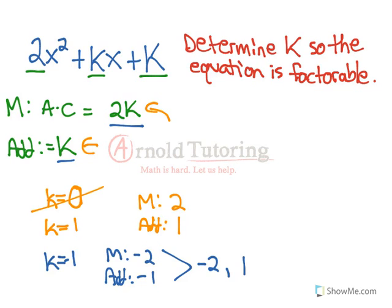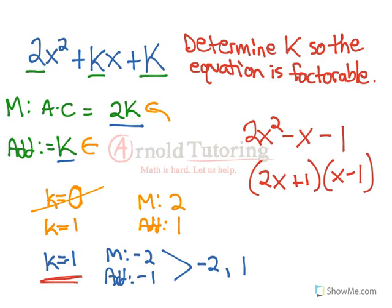And we can check it, right? If we had 2x² minus x, because k is negative 1, minus x minus 1, this would factor nicely into (2x + 1)(x - 1). So that's how we know k is equal to negative 1.